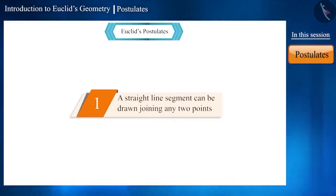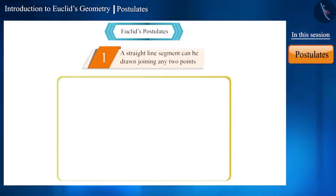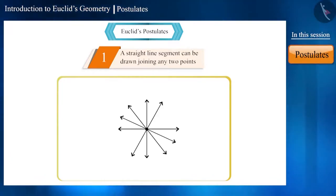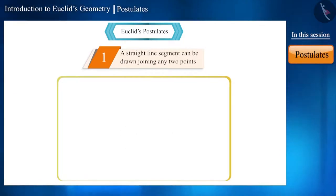Let's start with the first postulate: a straight line segment can be drawn joining any two points. Friends, let's start with one point and see how many lines we can draw that pass through one point. We can draw infinite such lines.